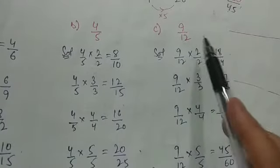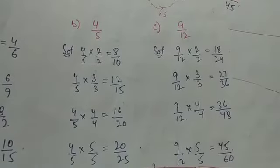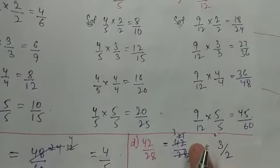Now the third part is by multiplying by 2. It is 18 by 24. Then 27 by 36. Then 36 by 48. And for the final it is 45 by 60.